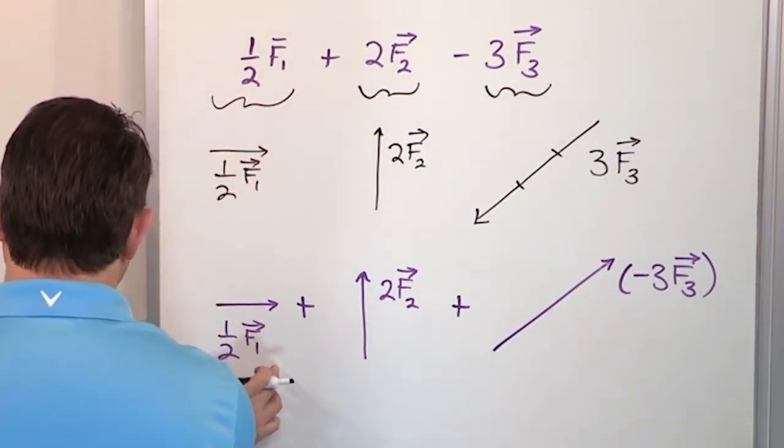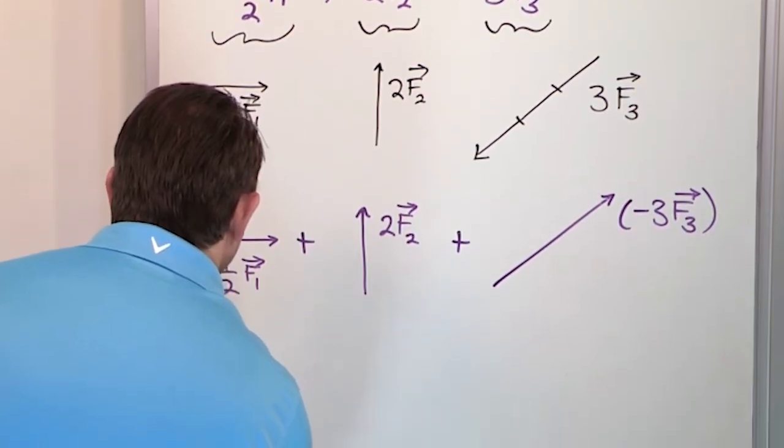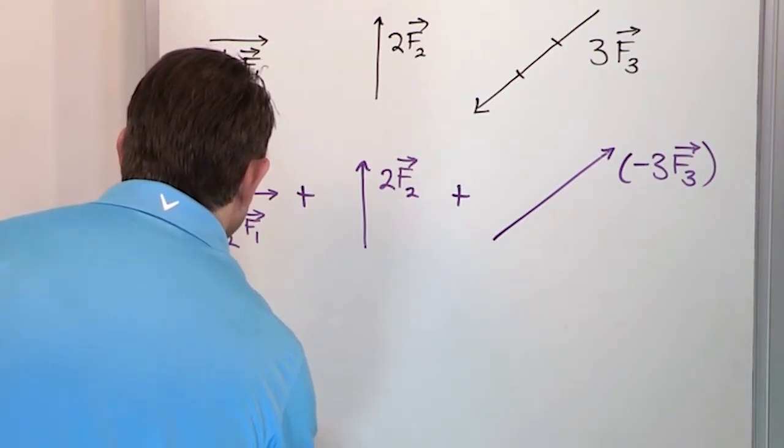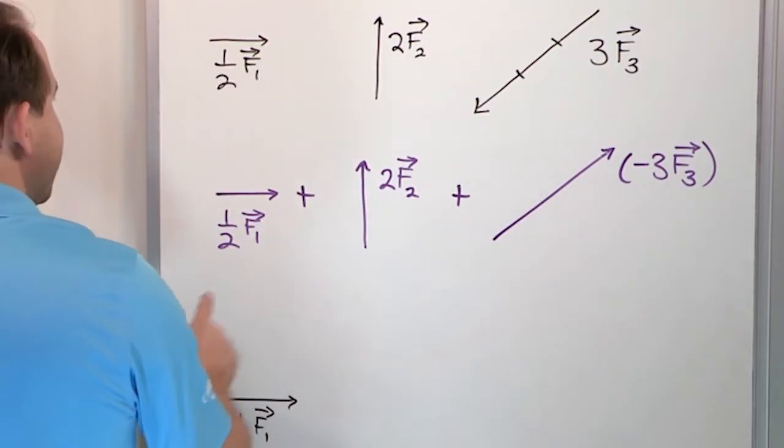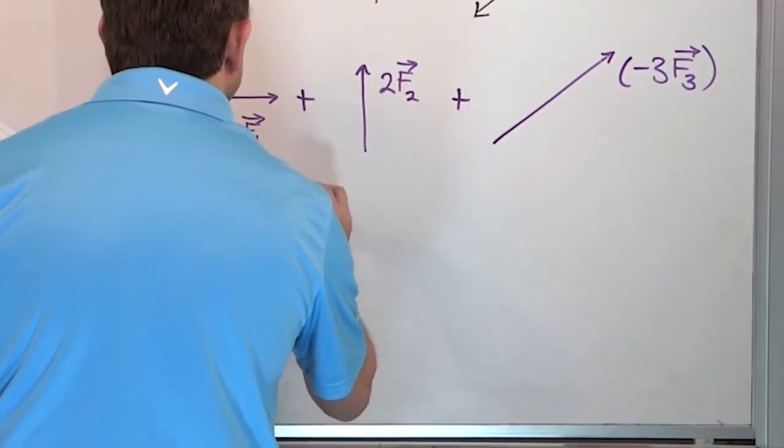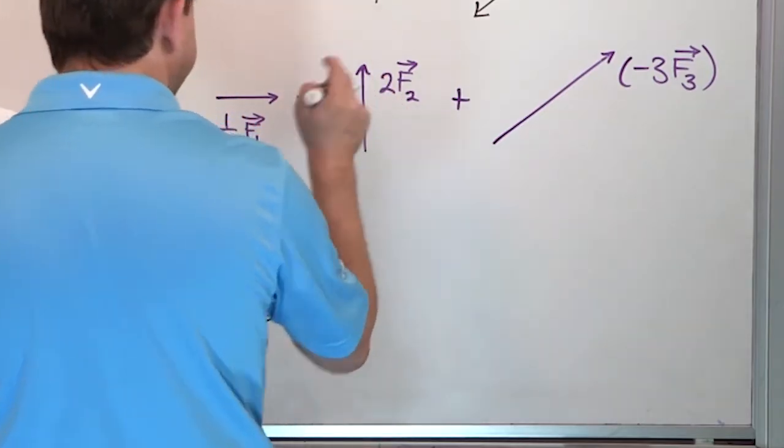So all I do is add this guy. Let's do it down here. So this is the length here, it would be one half F1, okay? And then this guy is going to be head to tail with it, so I'm going to draw him head to tail like this, and I'll draw 2F2, because that's what this guy is.